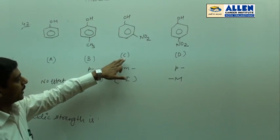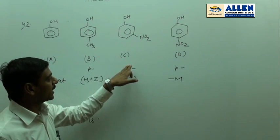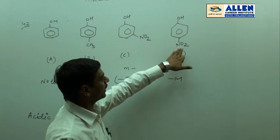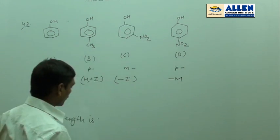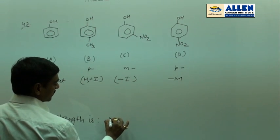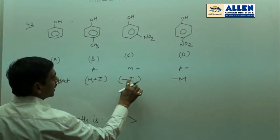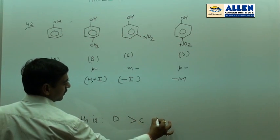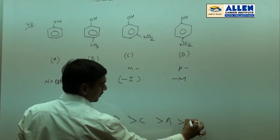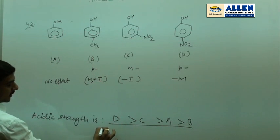At C, NO2 at meta position shows -I effect. At para position, NO2 shows -M effect. So the acidic strength is D > C > A > B. Answer is second option.